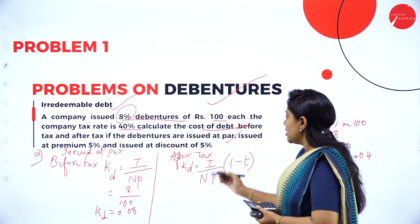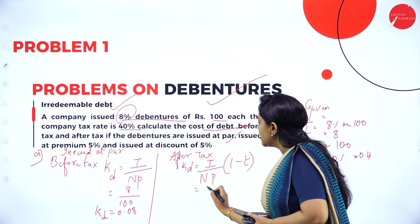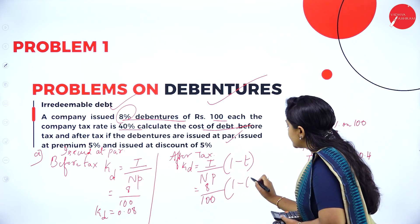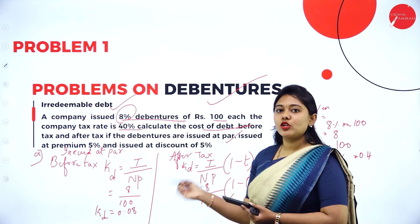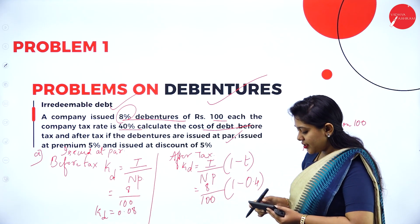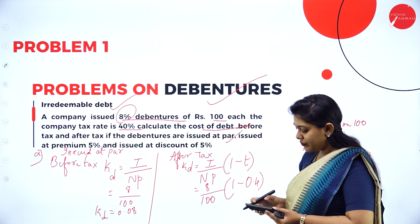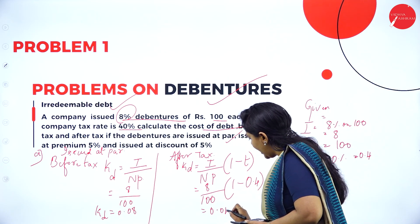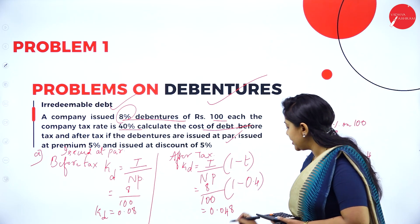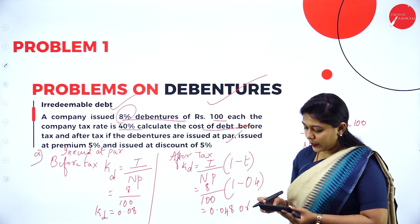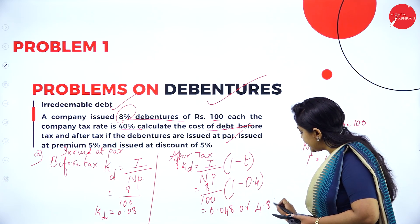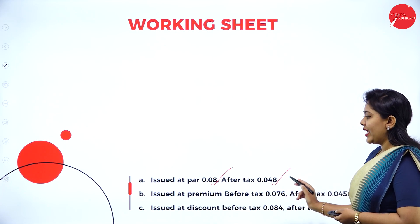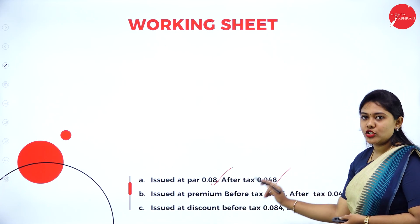So cost of debt before tax is 0.08. And after tax, the formula is interest divided by net proceeds into 1 minus tax. Interest is 8, net proceeds is 100, tax is 0.4, so 1 minus 0.4 is 0.6. Therefore 8 divided by 100 into 0.6 equals 0.048, which is 4.8%. So issued at par: before tax is 0.08 and after tax is 0.048.